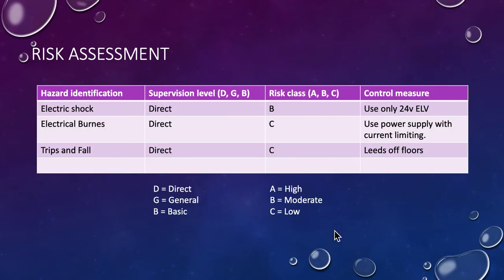Risk assessment: The risk of electric shock is a direct risk with relatively high possibility class B. The control measure is to use only ELV, and 24 volts is the max we'll be using here, well under the 50 volt limit.